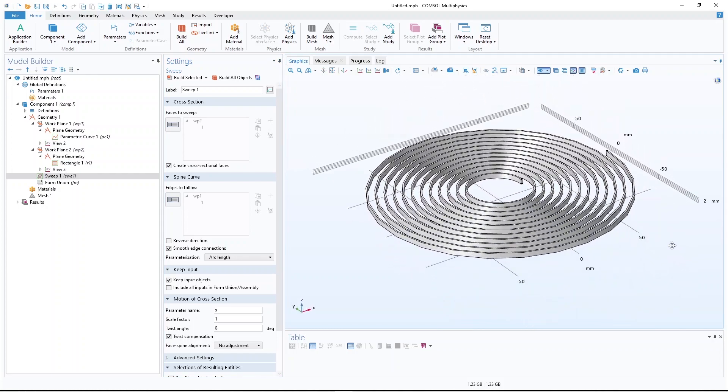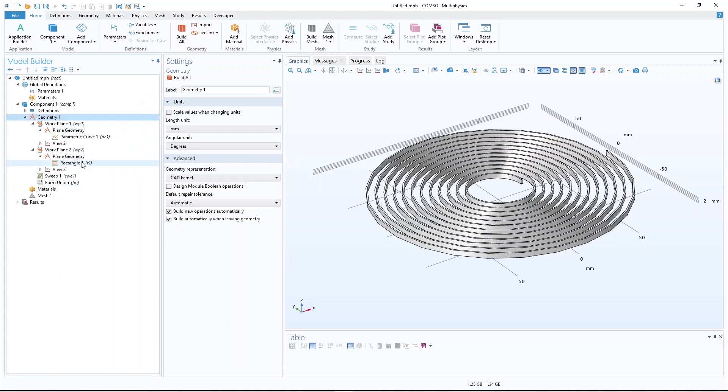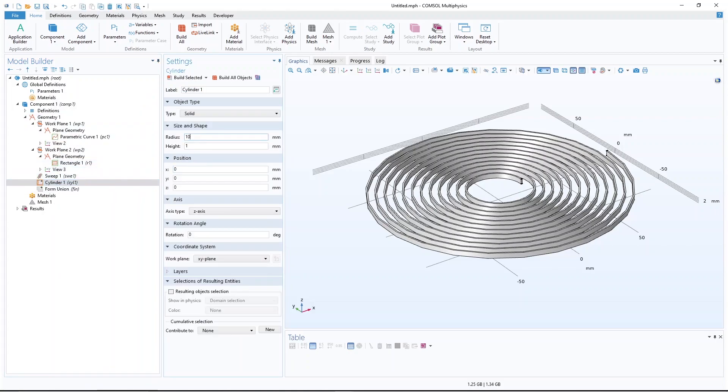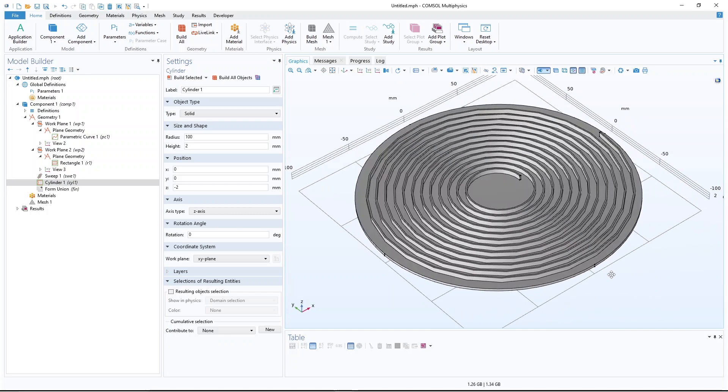So then that structure is constructed. I can add the base, the cylinder, let's say radius is 100, height is 2 millimeters, and I want to start it from right below this structure. Okay.